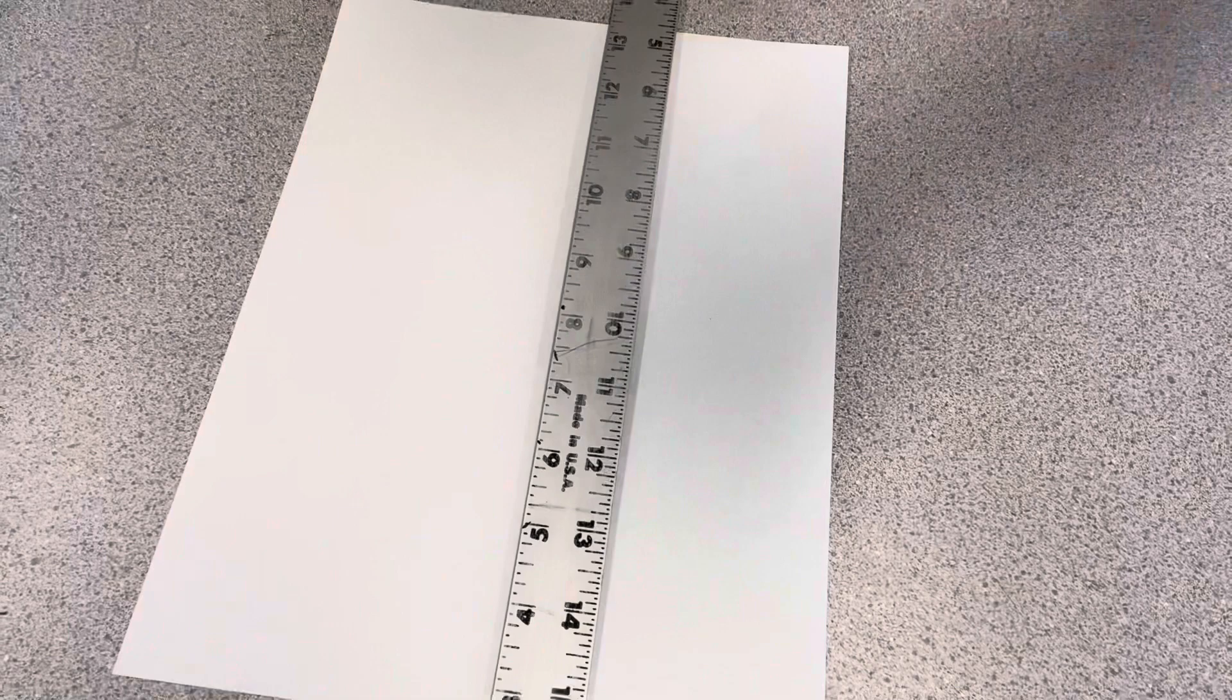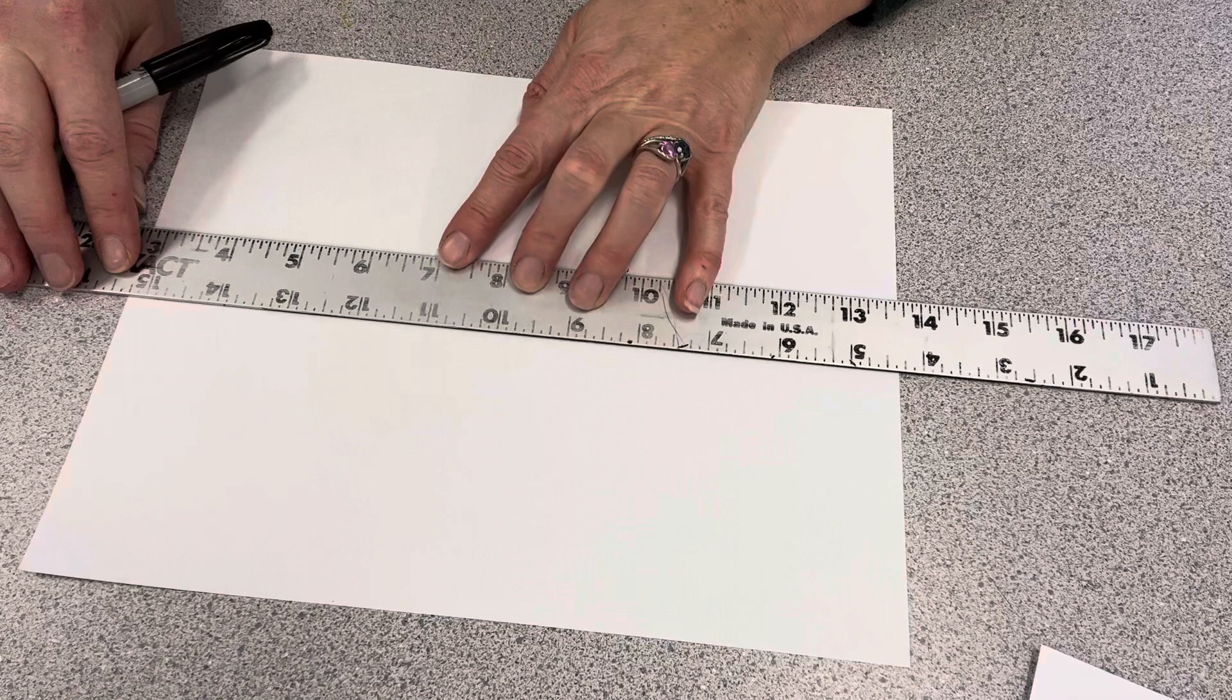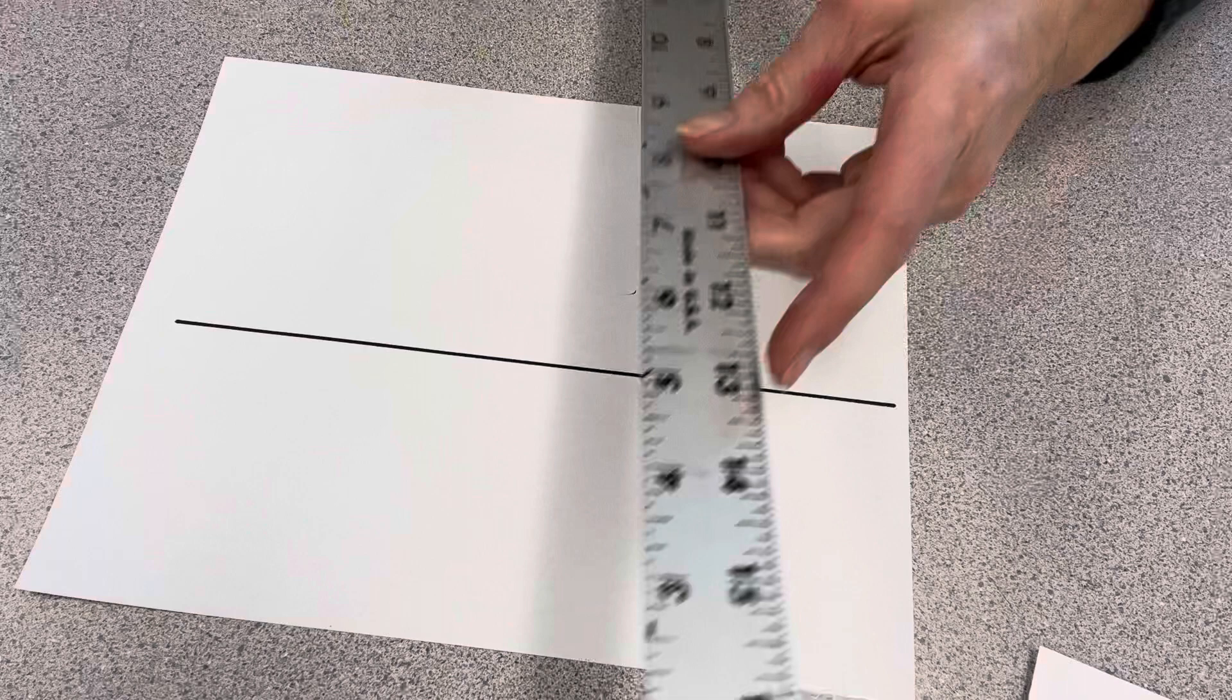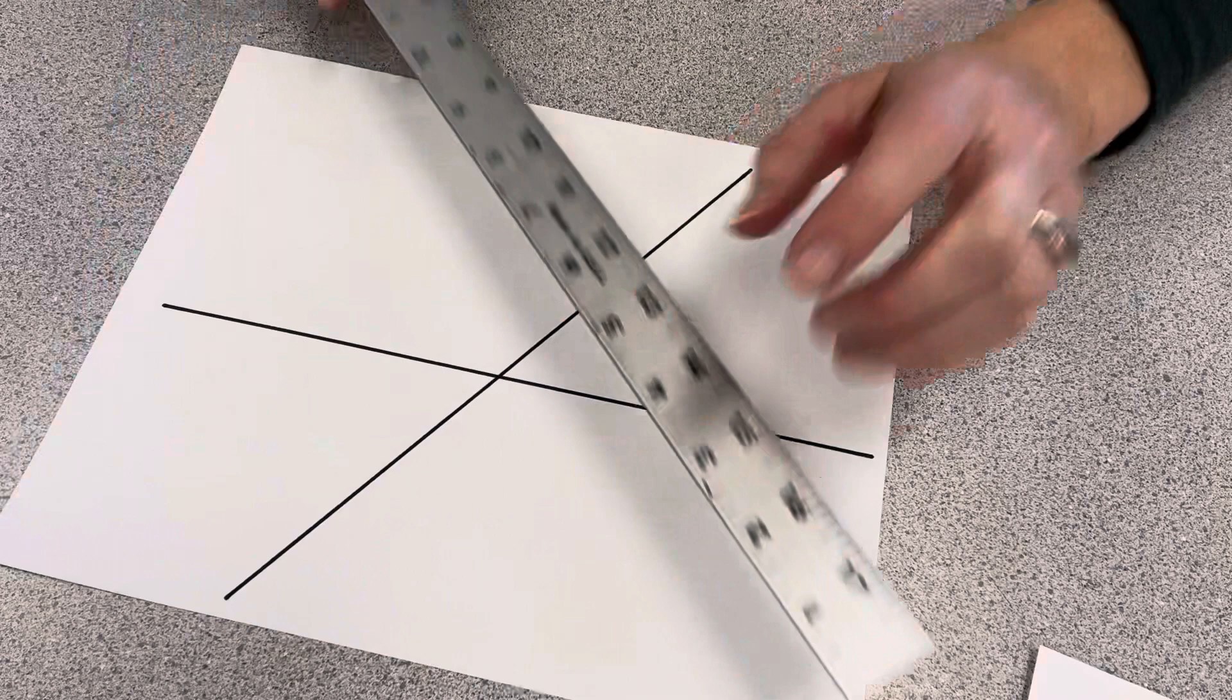So, first thing you're going to do, and you don't have to do yours exactly like mine, just so you know. But the first thing that you're going to do is create three intersecting lines. Okay, so one, two, and you're going to want to intersect with that. One, two, and three.